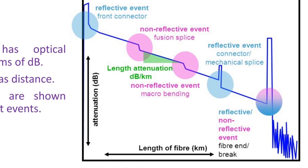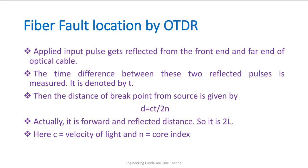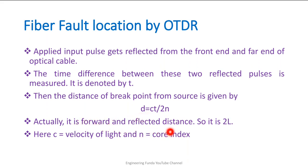Two things can be done: one is to calculate the slope, and second is to calculate the fault location. When laser pulses are applied, the reflected signal is measured, and based on the time difference T between two pulses we calculate the distance from the fault. That distance is given by the formula: distance = C·T / 2n, where C is the velocity of light, T is the time difference between the transmitted and reflected signal, and n is the core refractive index. Based on the strength of the reflected signal we can also determine how much attenuation is happening.